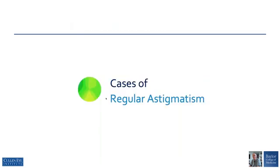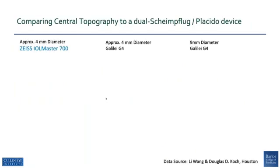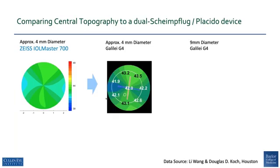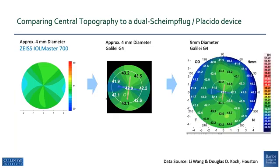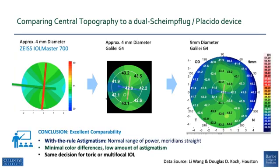Let's look at some cases of regular astigmatism, comparing central topography to a dual Scheimpflug Placido device. The IOMaster 700 is on the left showing the four-millimeter zone; this is the Galilei G4 showing the nine-millimeter zone. You can see the axes are similar, there's a normal range of power, the meridians are straight, there are minimal color differences, and a low amount of astigmatism. The clinician would make the same decision regarding a toric or multifocal IOL for that patient.